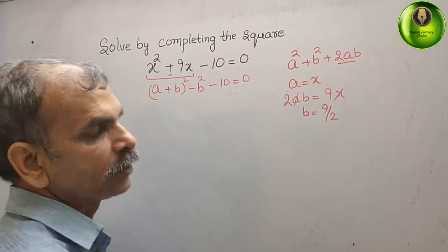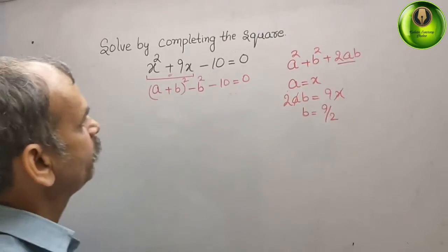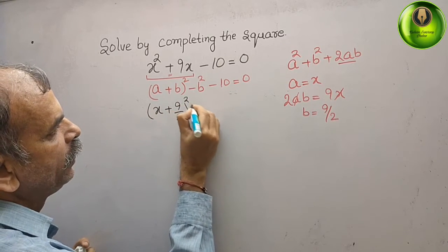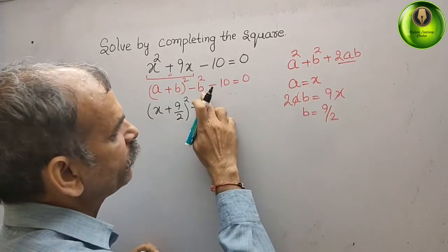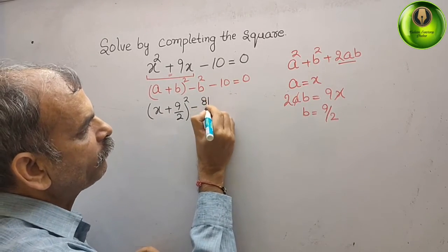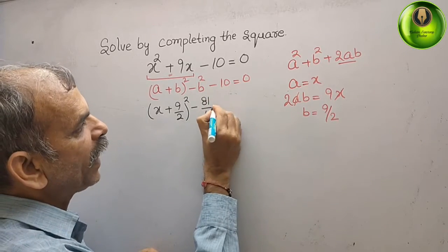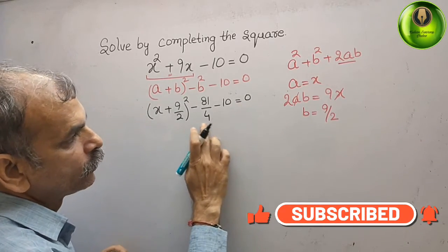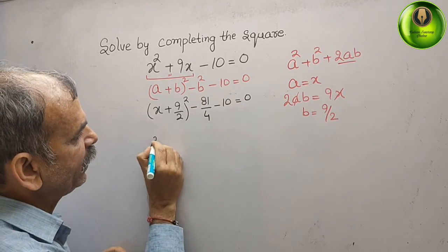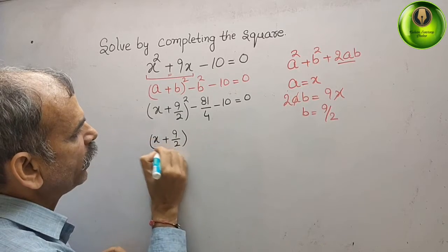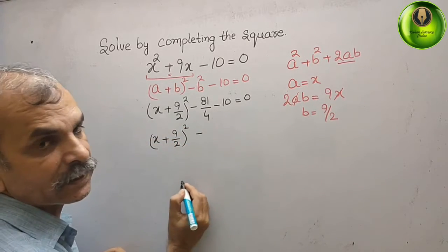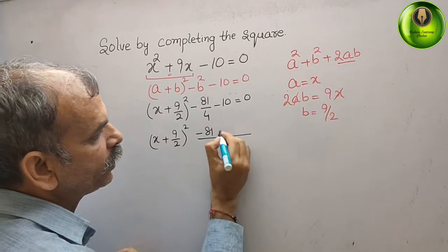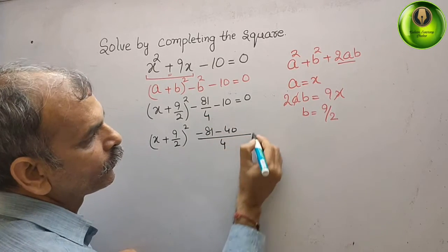Now substitute these two values. We will get (x + 9/2) whole square, minus b squared which is 81 by 4, minus 10, and that gives you 0. Taking the LCM of the two terms, we get (x + 9/2) whole square minus, with denominator 4: 81 minus 40, equal to 0.